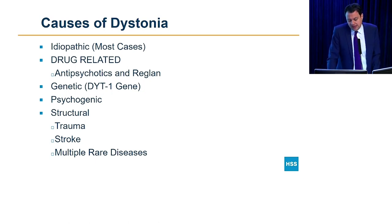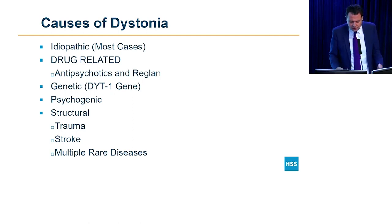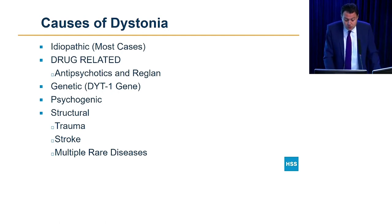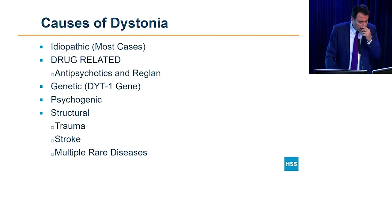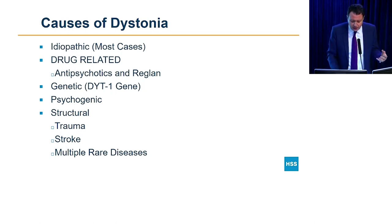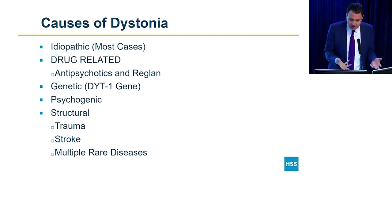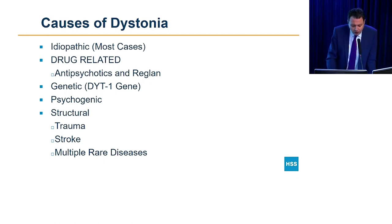There are also psychogenic dystonias, where psychological stress results in abnormal movements. Structural causes include stroke or other brain lesions — for example, trauma to the brain — that can injure the motor circuitry and result in abnormal posturing of the arm or leg. Some rare disorders can cause that as well.